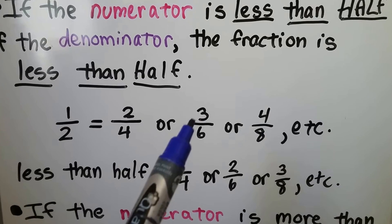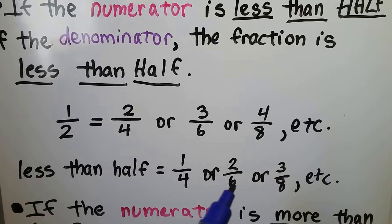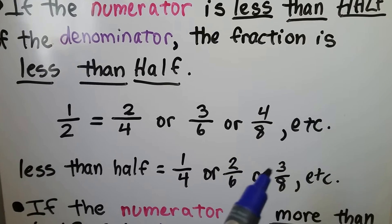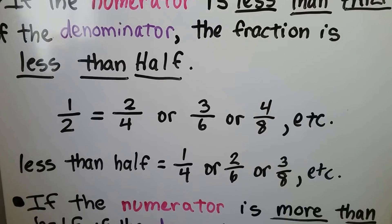Less than half of 6 would be less than 3, so 2 sixths would be rounded down to 0. 4 eighths is half, so 3 eighths would be rounded down to 0.